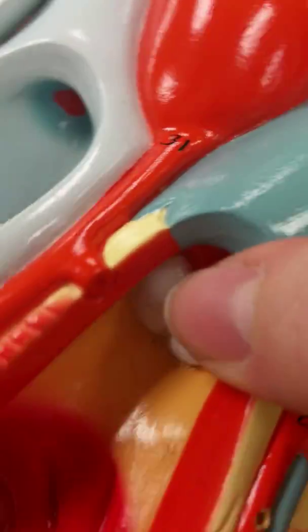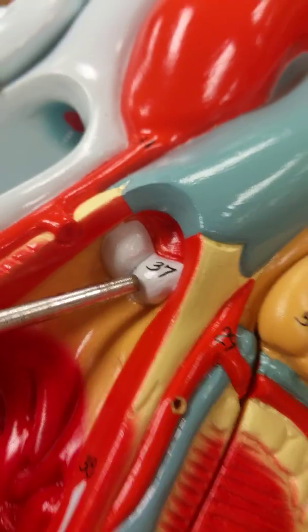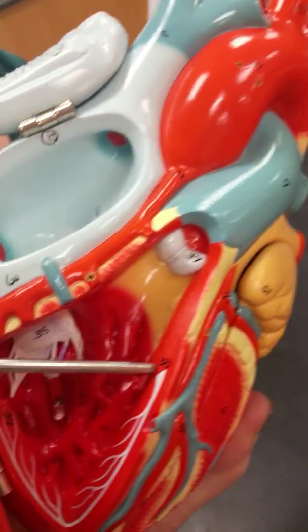It's the little cusp thingy right here. 38. The right branch bundle of His.